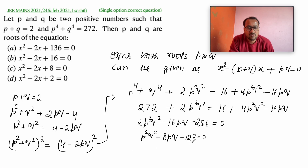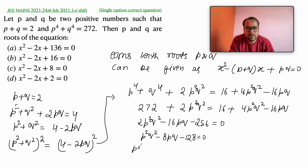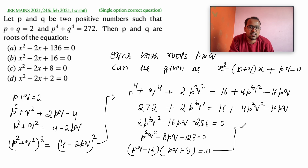We can factorize this quadratic by splitting the middle term. Since 128 equals 16 times 8, we get (pq minus 16)(pq plus 8) equals zero. This gives pq equals 16 or pq equals minus 8.